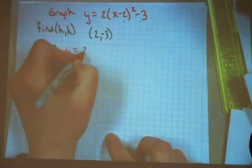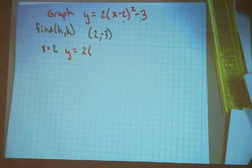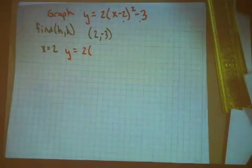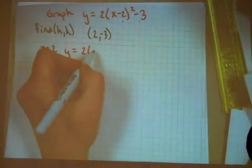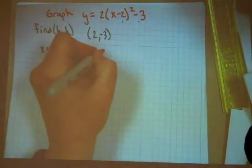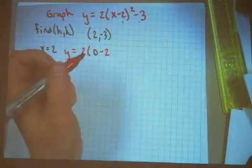Next, let's find another point that happens to be on this particular parabola. Since my vertex is at 2, negative 3, why not see what's at 0? So I'm going to plug in 0 for x and we will finish the rest of the equation.